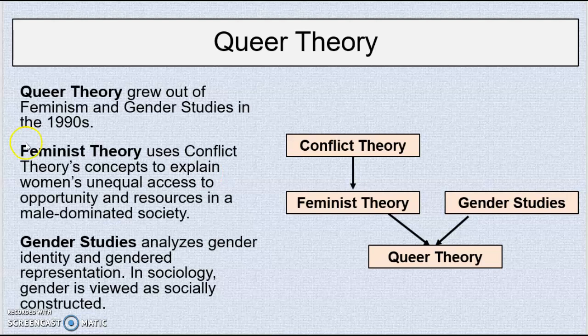First up we have feminist theory. Feminist theory takes the idea of inequality and resources being unequally shared between groups in society, where resources can be things like power, reputation, money, and respect. Instead of looking largely at economics as the basis for that conflict, feminist theory looks at sex assigned at birth as the dominant source of that conflict, where traditionally in the majority of societies, men have had more power than women and more control over resources.